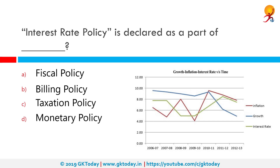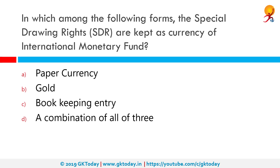Interest Rate Policy is declared as part of Monetary Policy. Monetary Policy refers to the policy of the Central Bank, i.e., the Reserve Bank of India, in matters of interest rates, money supply, and availability of credit. It is through monetary policy that RBI controls inflation in the country. Historically, from 2000 until 2013, India's interest rate averaged 6.6%, reaching an all-time high of 14.5% in August 2000 and a record low of 4.3% in April 2009.